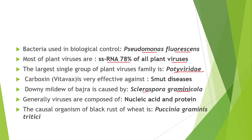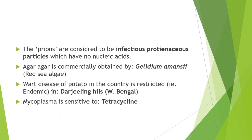Generally viruses are composed of nucleic acid and protein. The causal organism of black rust of wheat is Puccinia graminis tritici. Black rust or stem rust of wheat is also known as the killer disease of wheat. It is severely found in the southern, central and eastern parts of India.